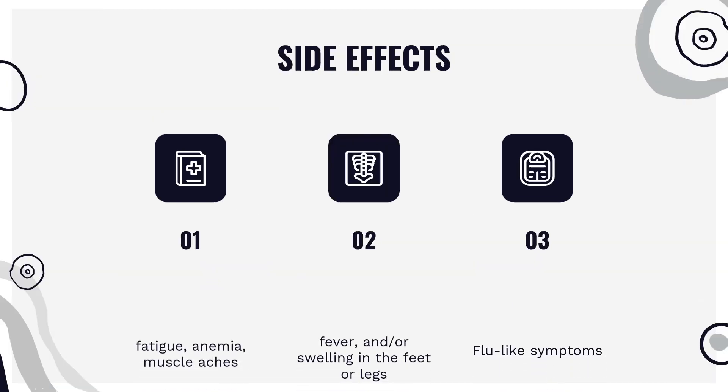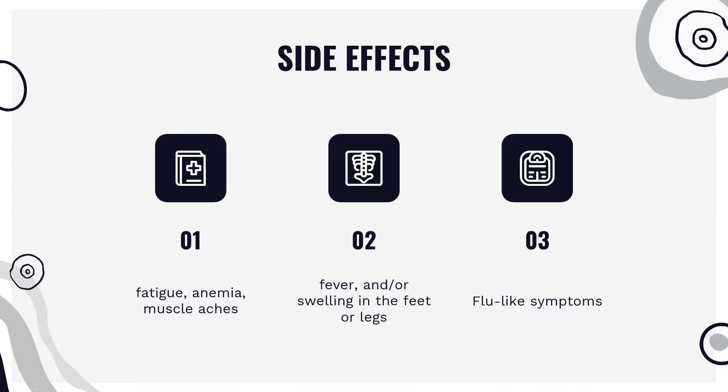Paralysis. Side effects can include fatigue, anemia, muscle aches, fever, and/or swelling in the feet or legs. Flu-like symptoms are common after the first infusion, although not subsequent infusions, and are thought to occur because of its potential to activate human gamma-delta T cells.